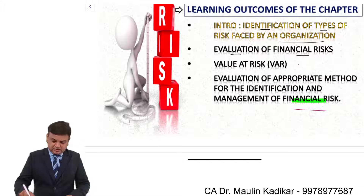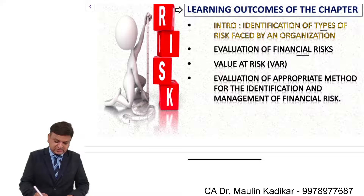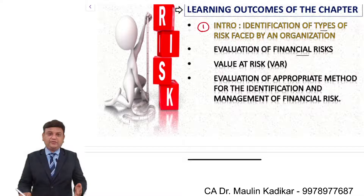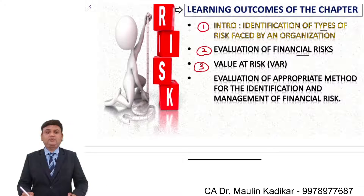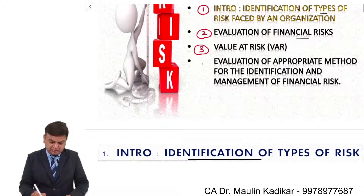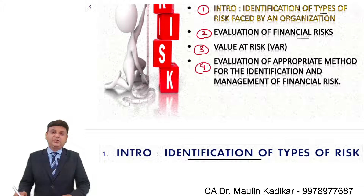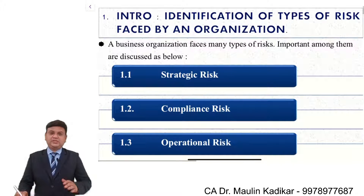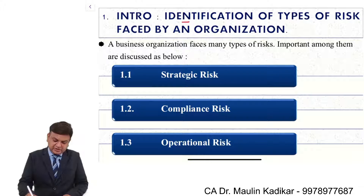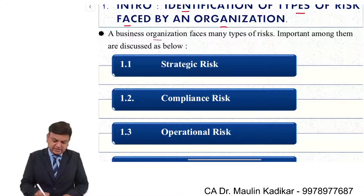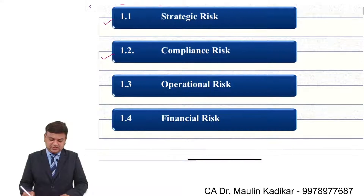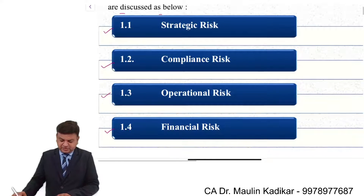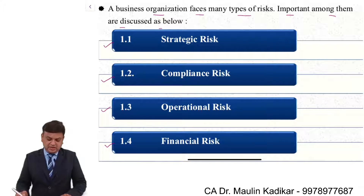Coming back to the chapter structure: first, introduction — identification of the type of risk; second, evaluation; third, Value at Risk (VAR), which is related to portfolio management; and fourth, evaluation of the appropriate method for identification and management of financial risk. A business organization faces many types of risk. The important ones are: strategic risk, compliance risk, operational risk, and financial risk.